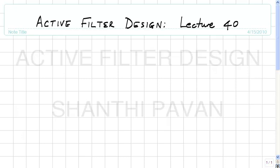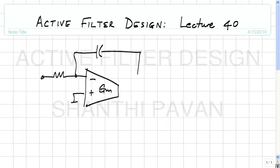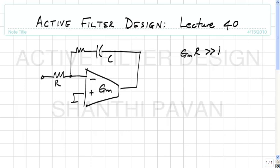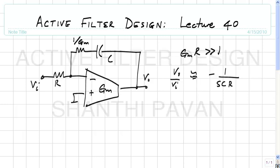We realize we can do away with the op-amp as long as we can get a transconductor GM which is sufficiently large, where 'sufficiently large' is defined as GMR being much much larger than 1. If this is true and we add a small resistor in series with the capacitor, where the value of this resistor is 1/GM, then the transfer function VO/VI is approximately minus 1/(SCR), with a correction factor of 1/(1 + 1/GMR).